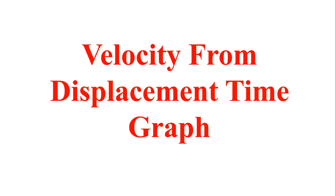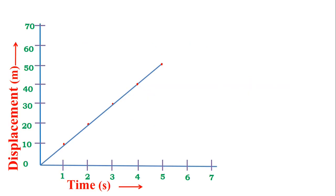Today I want to tell you how we can find out the velocity from a displacement-time graph. If you have been given a displacement-time graph, how can you get the velocity of a moving body with the help of that graph? Let's start with the graphical representation of motion.